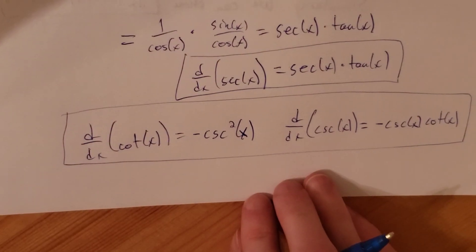The limit as h goes to zero of sine of x is just sine of x, because there's no h in there. The limit as h goes to zero of cosine of h minus one over h is zero, and the limit as h goes to zero of sine of h over h is one — that's what we proved earlier in the semester. The limit as h goes to zero of cosine of x is just cosine of x. So the first term is zero, and we're left with cosine of x. That is our derivative of sine of x.